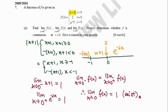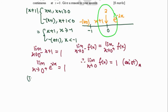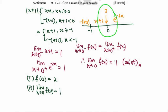Next, we need to determine whether the function is continuous at x = 0. To check continuity, we apply the three continuity conditions. For condition 1: f(0) = 2. For condition 2: the limit as x approaches 0 of the function equals 1, which is the result from our previous part.